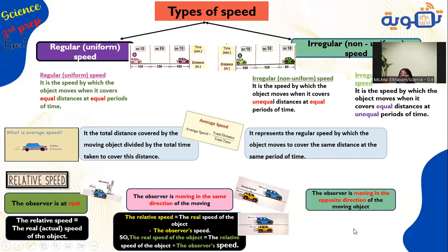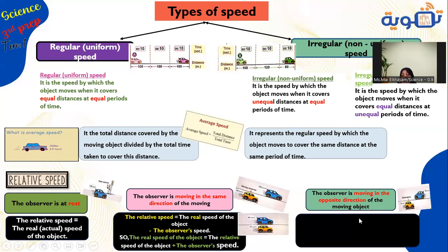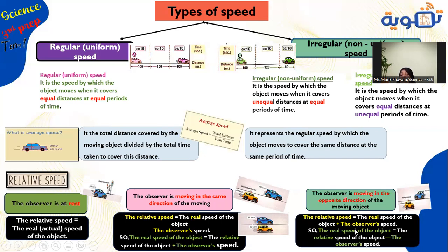If the observer is moving in the opposite direction of the moving object, add the real speed plus the observer speed to get the relative speed. To find the real speed when the relative speed and observer speed are given, the actual speed equals the relative speed minus the observer speed.